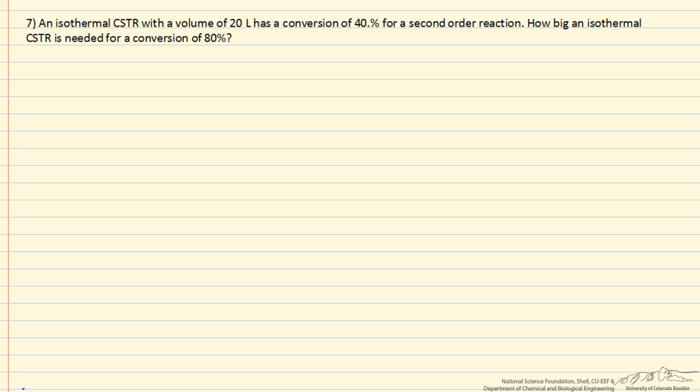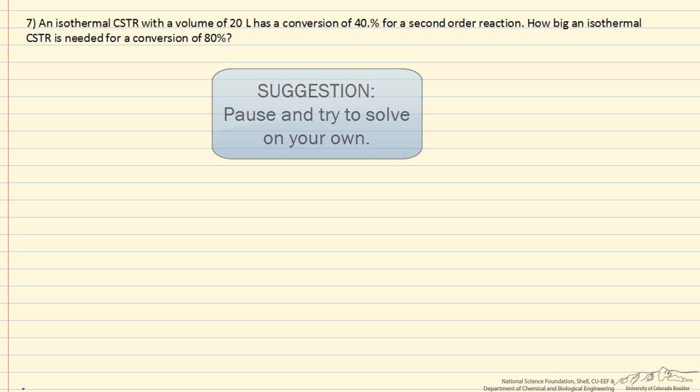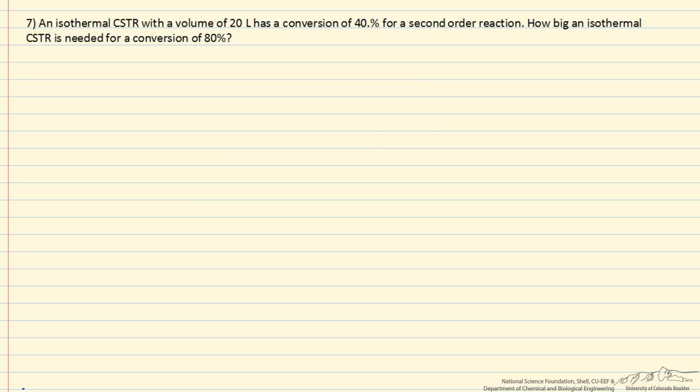In this problem, we have an isothermal CSTR. We're given the volume is 20 liters and we know the conversion is 40%. It's a second order reaction, and the question is how big would a reactor have to be at the same temperature, same reaction, but for conversion of 80%?